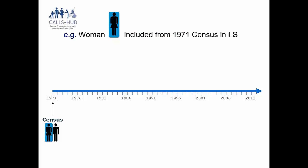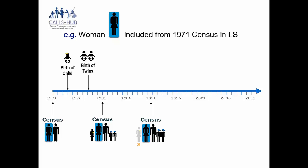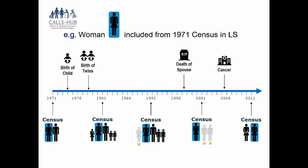Here is an example of data available in the LS for one imaginary woman in England and Wales. She enters the sample at the 1971 census, which included questions on marital history and childbirth history. She has two birth records added — a daughter and then twin boys. The 1981 and 1991 census data for her household are successfully linked in, and by 1991 the daughter has left home. In 1997, the husband dies and a widowhood record is added. She's present at the 2001 census now living alone, there's a cancer registration, and she appears at the 2011 census with a co-resident grown-up daughter before dying soon afterwards.